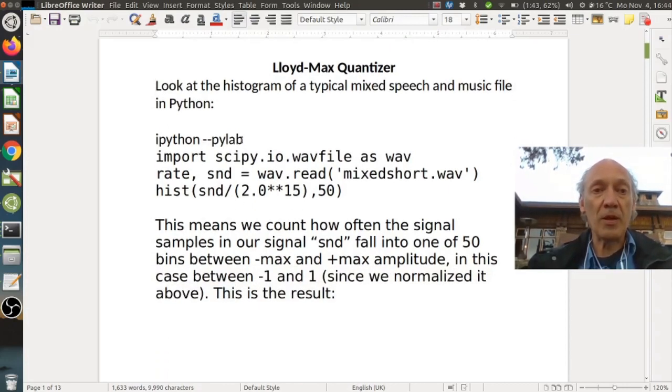We use ipython-pylab, type this in a terminal and it opens the interactive mode. And then we simply import our file using scipy.io.wavfile. And we use wav.read to read in our file mixedshort.wav. And next you can see we plot a histogram using the hist function. And the hist function uses our sound file and normalizes it to the range between minus one and one. And the next argument, the 50, is the number of bins that it uses. So basically it subdivides our range from minus one to one into 50 consecutive bins.